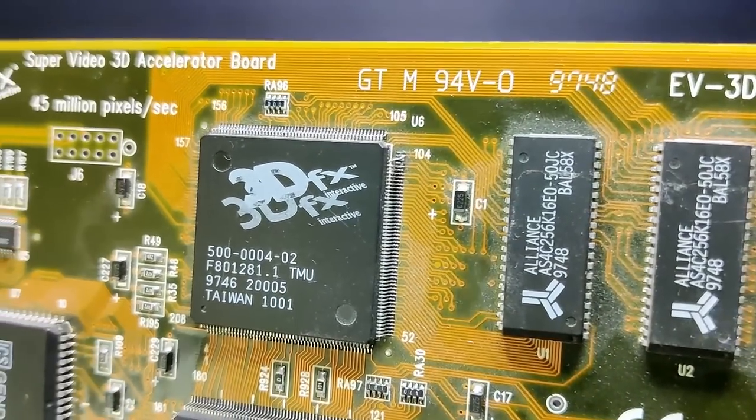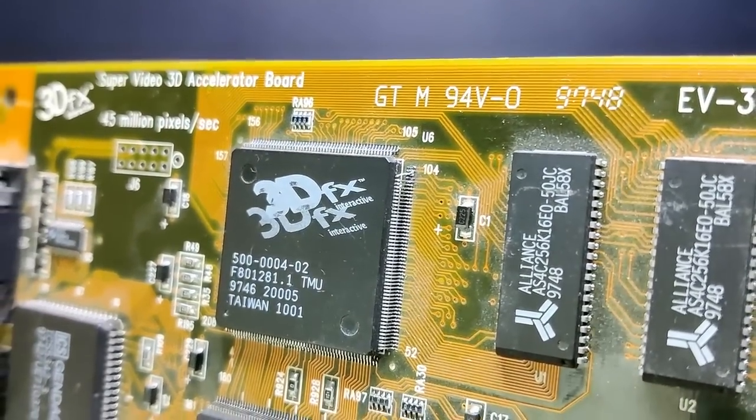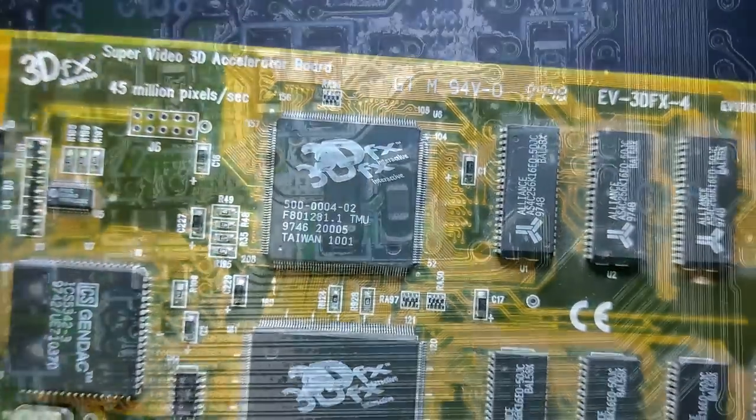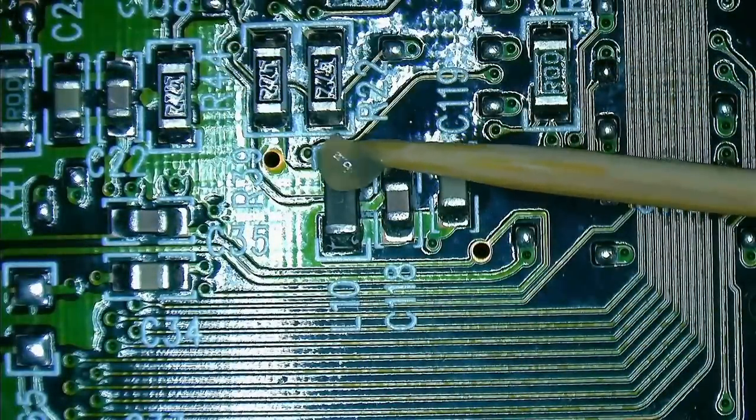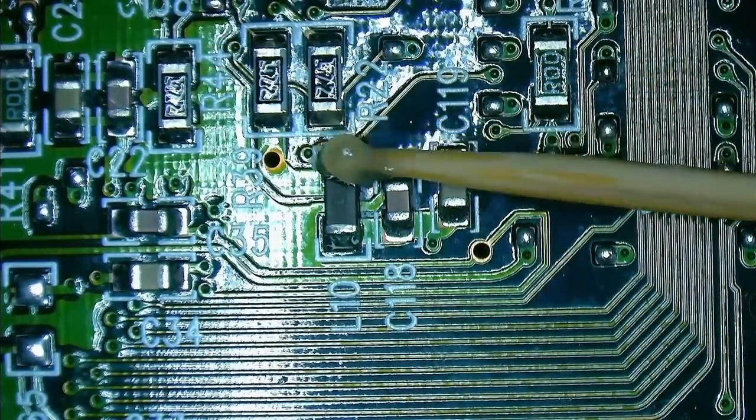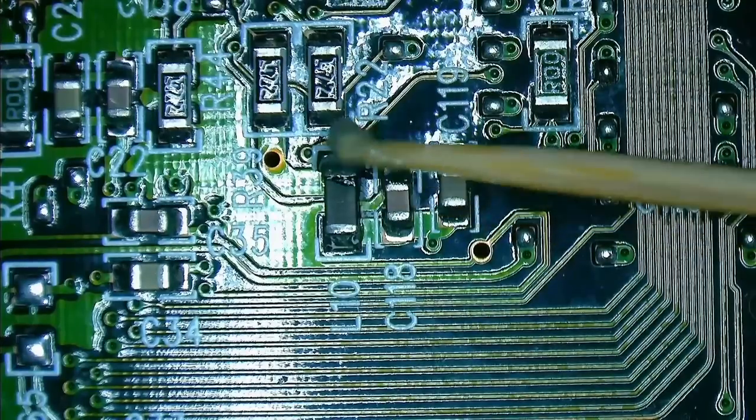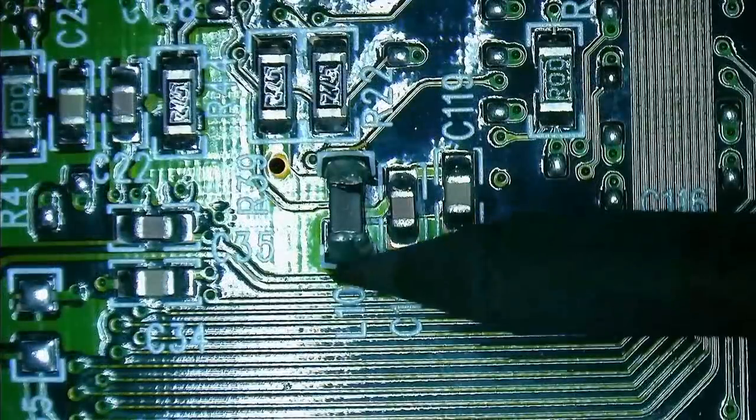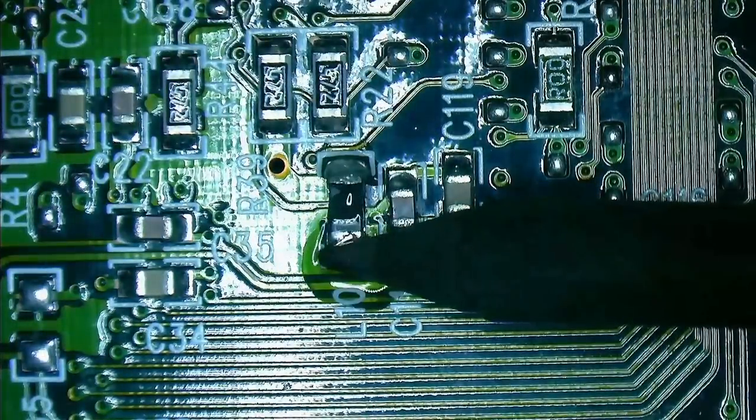Before I start my attempt to fix the MaxiGamer 3D which has a few pins broken off the TMU chip, I want to return what once belonged to this card. But not so fast. Once more my limited understanding of electronics throws a wrench in the works. I falsely assumed the black SMDs to be inductors. However, they seem to be ferrite beads.